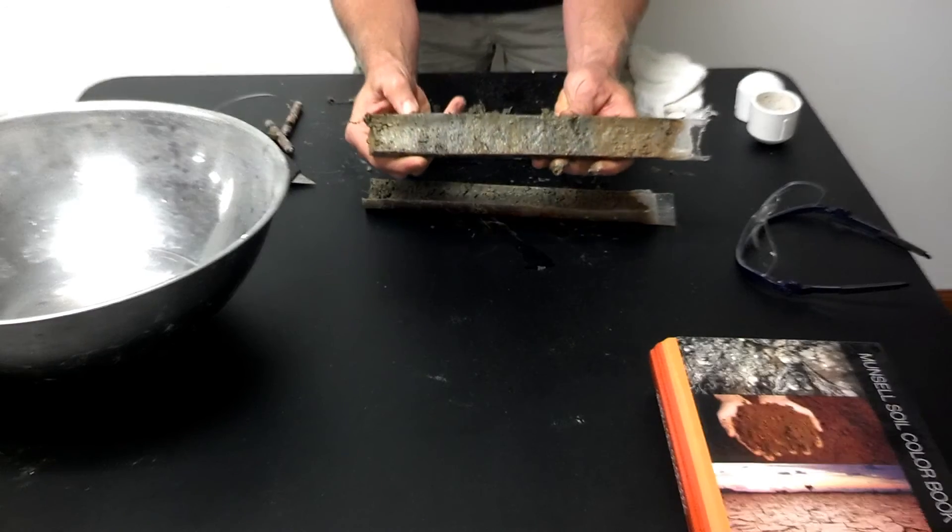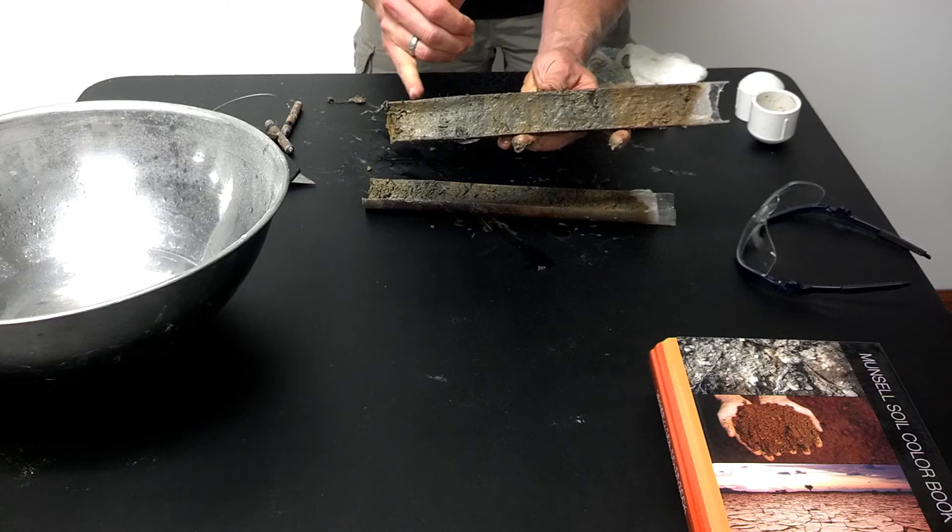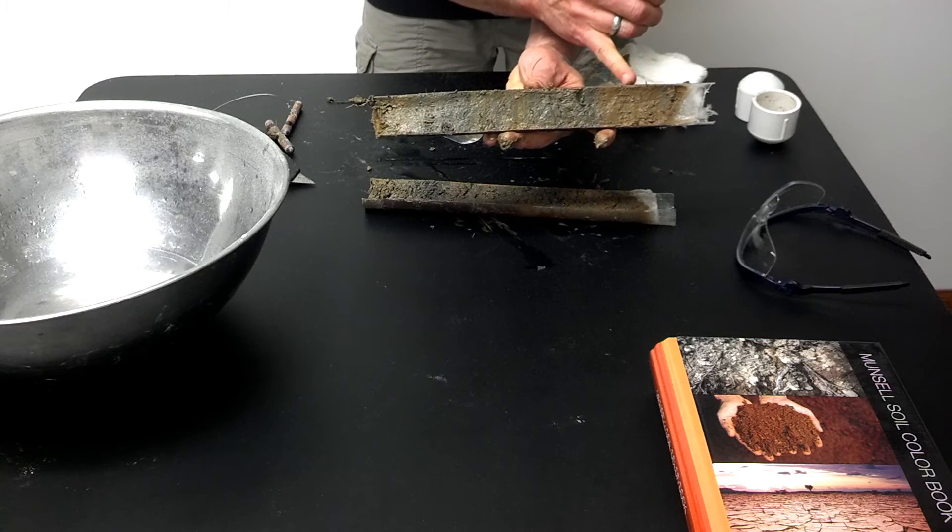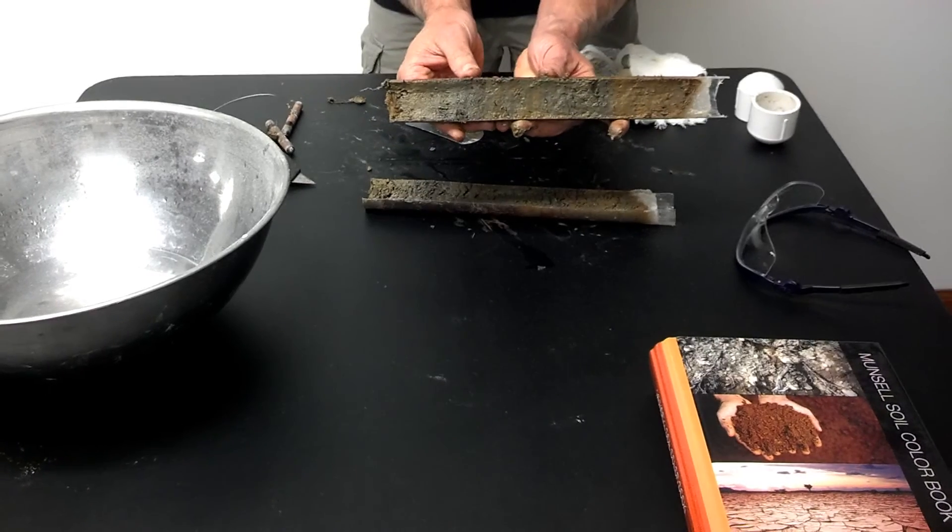Now with the surface scraped, we can see finer layering within the sample itself. We'll start to look at these different layers and see if they can tell us about the history of what the lake was doing when these different sediment layers were deposited.